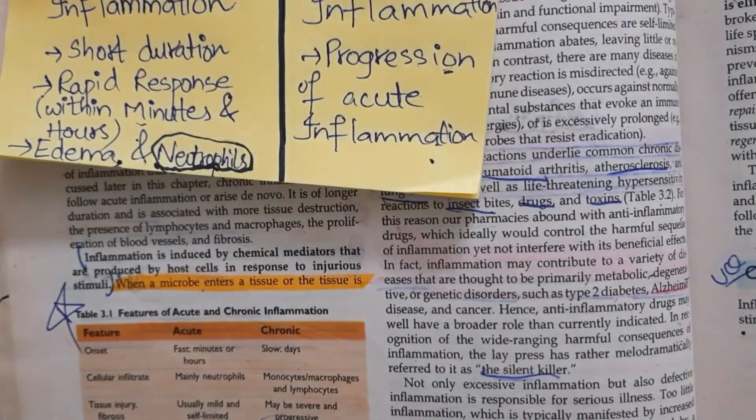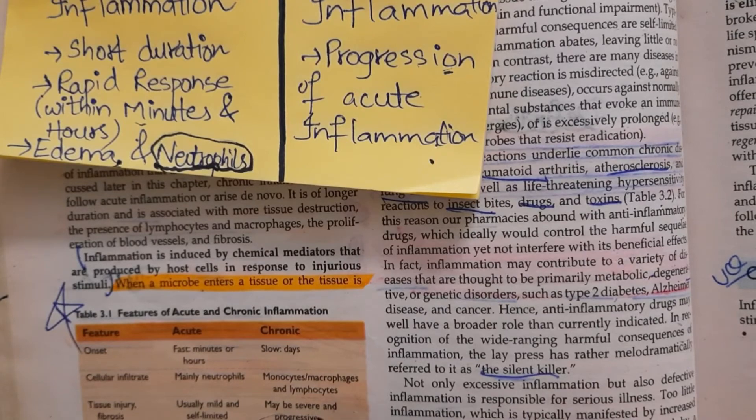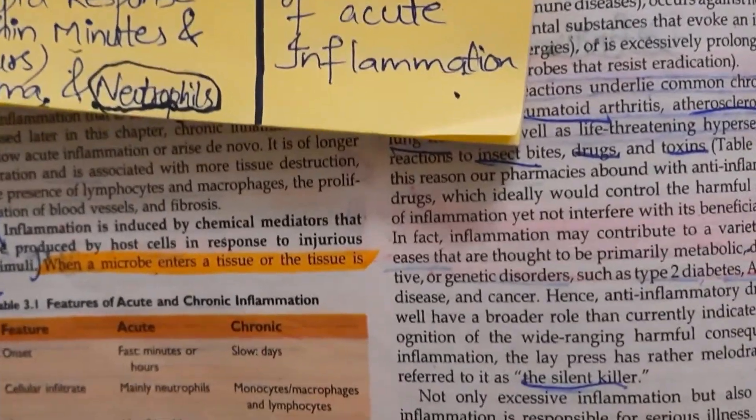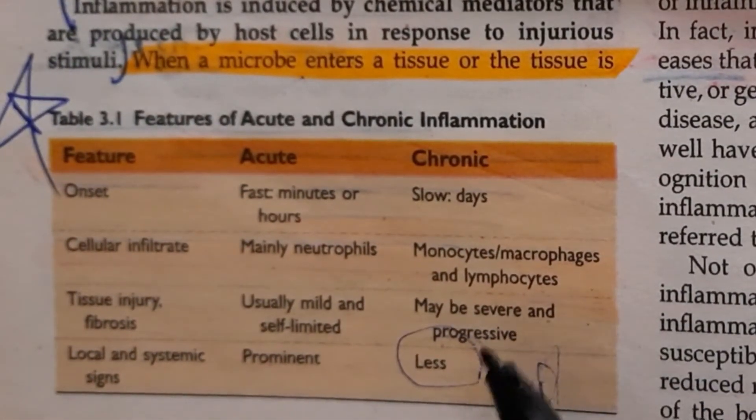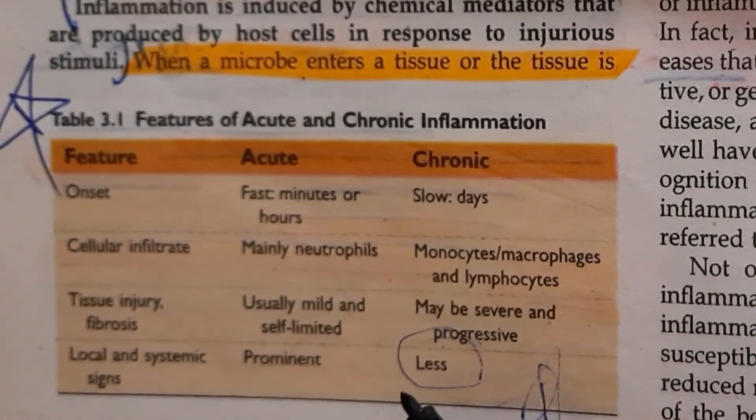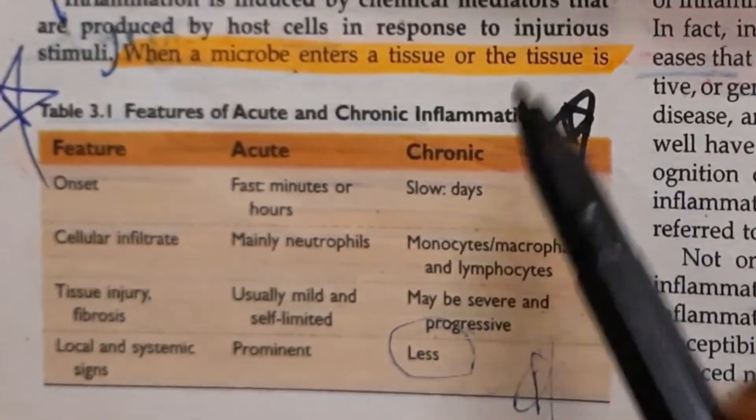Chronic inflammation occurs after some days. It is a slow inflammation type. Chronic inflammation, you can mainly see macrophages and lymphocytes. And it is very severe and progressive and the signs are less prominent. So this is a very important table to remember.